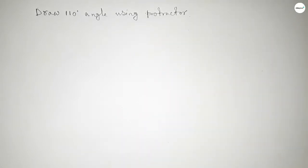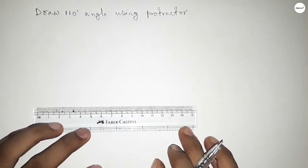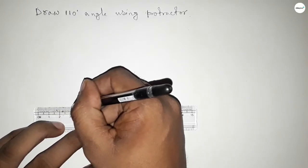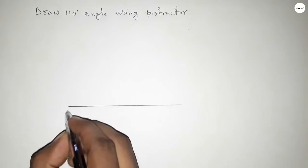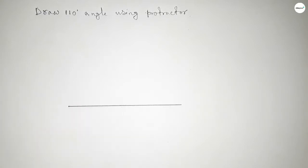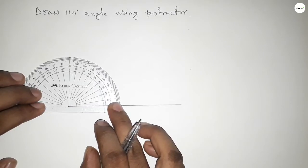Let's start the video. First of all, draw a line of any length. Next, to draw a 110 degree angle, place the protractor on the line perfectly.